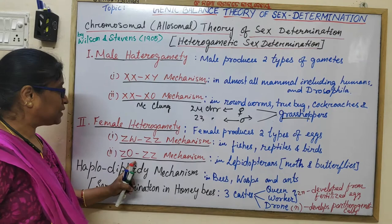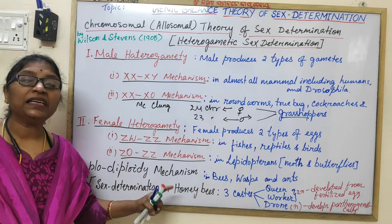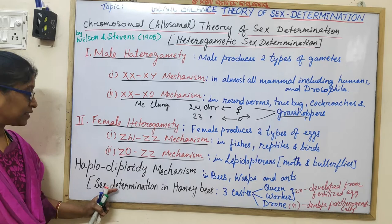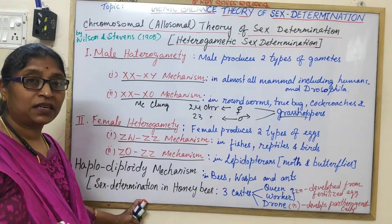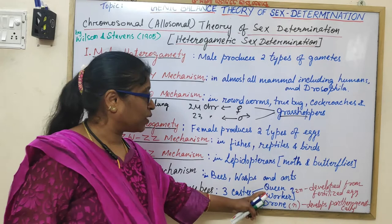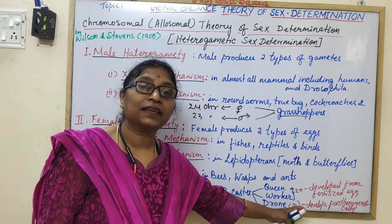We also discussed the haplodiploidy mechanism of sex determination, seen in bees, wasps, and ants. When asked about sex determination in honeybees, the answer is the haplodiploidy mechanism. Honeybees have three castes: queen, worker, and drone. The females — queen and workers — develop from fertilized eggs, while the drone (male) develops from an unfertilized egg, that is, parthenogenetically.